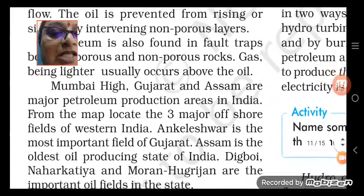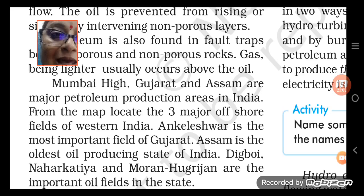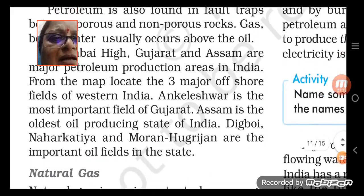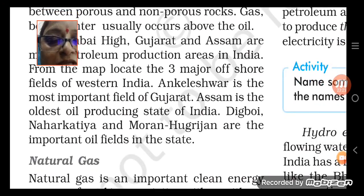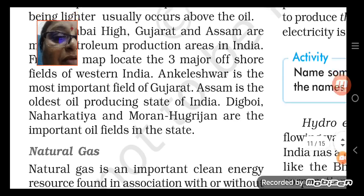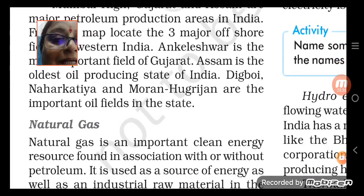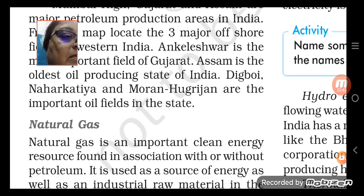Major petroleum production areas are Mumbai High, Gujarat, and Assam. Looking at the map, you can see major offshore fields — Ankleshwar is very important and famous. In Assam, Digboi, Naharkatia, Moran, and Hugrijan are the important oil fields, situated on the banks of the river. These are the most important oil fields.